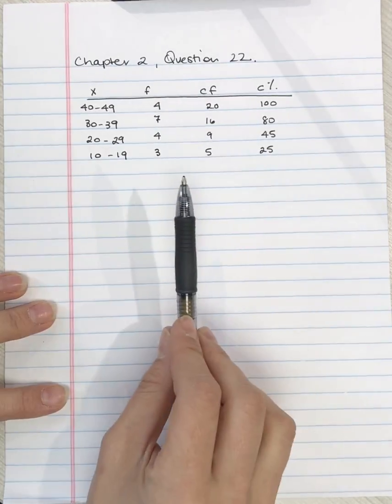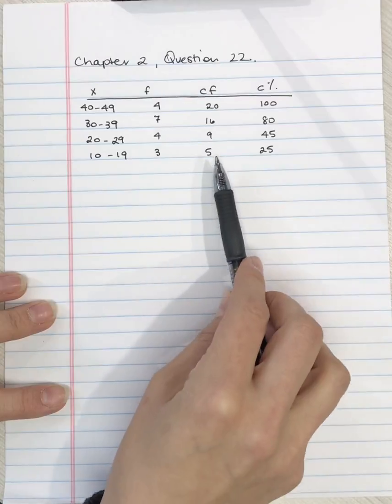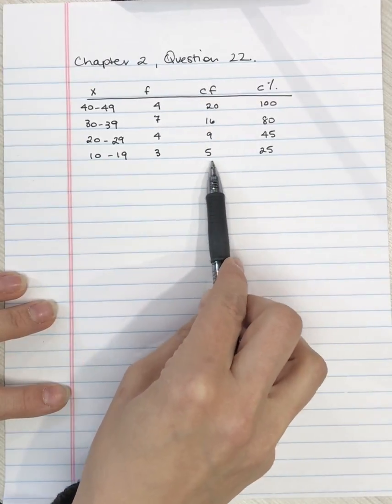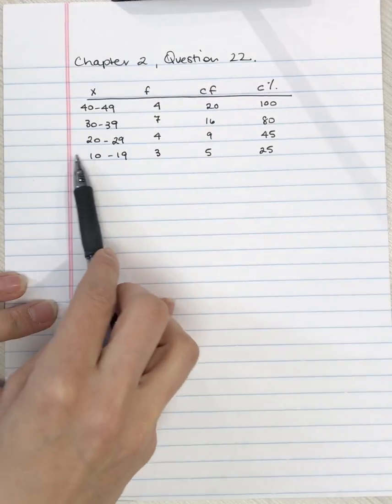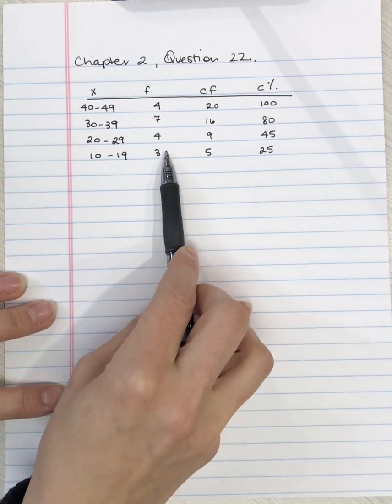We can see that we don't have the full frequency distribution because the cumulative frequency here is 5, but the frequency of this lowest row is only 3.